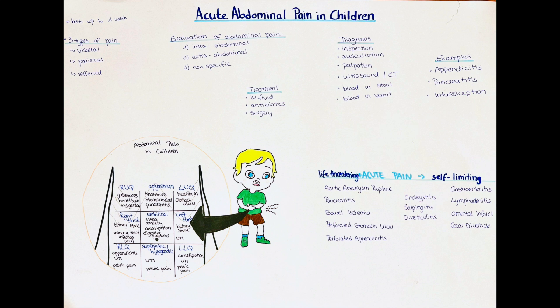Causes of acute pancreatitis include drugs such as valproic acid or tetracycline, abdominal trauma or surgery, ulcerations with pancreatic involvement, and familial predisposition through conditions such as hypertriglyceridemia or hypercalcemia. Around 50% of patients have pain not only in the anatomic area of the pancreas but extending over most of the abdominal surface. Acute pancreatitis may also produce signs such as pleural effusion, Grey-Turner sign (flank skin discoloration), Cullen sign (periumbilical skin discoloration), ascites, and jaundice.